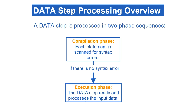A Datastep is processed sequentially via the compilation and execution phases. In the compilation phase, each statement is scanned for syntax errors. If an error is found, SAS will stop processing. The execution phase only begins after the compilation phase ends. In the execution phase, the Datastep works like a loop, repetitively executing statements to read data values and creating observations one at a time. Each loop is called an iteration. We can refer to this as the implicit loop, which is different from the explicit loop using the iterative do, do-while, or do-until statements.